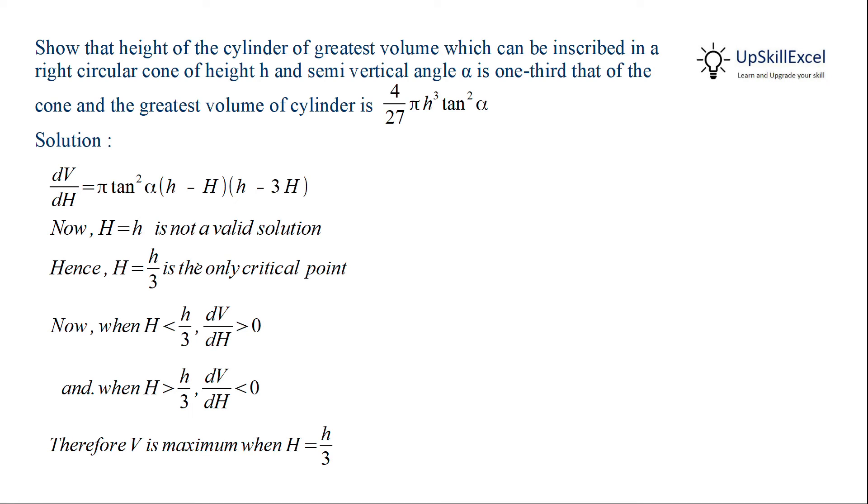Hence volume is maximum when height of cylinder is equal to one third of height of cone. Now we can substitute the height equal to h over 3 in the formula for volume and then doing the simplification we get volume is equal to 4 over 27 pi h cube tan square alpha.